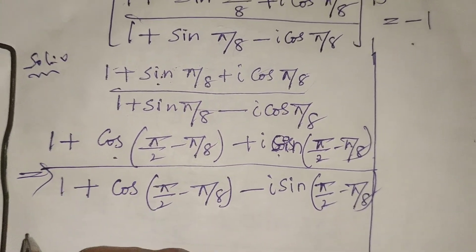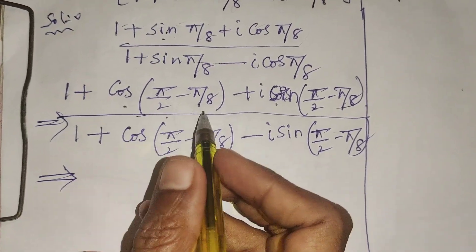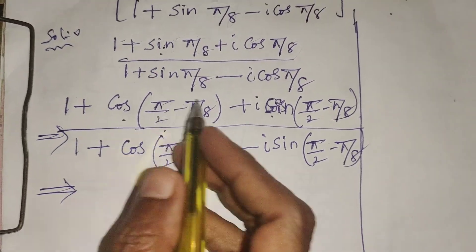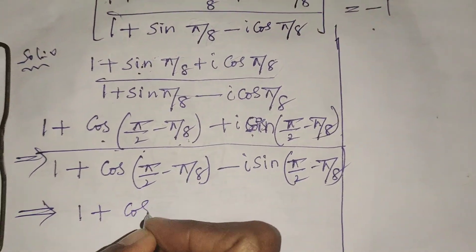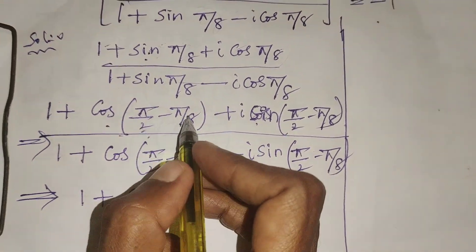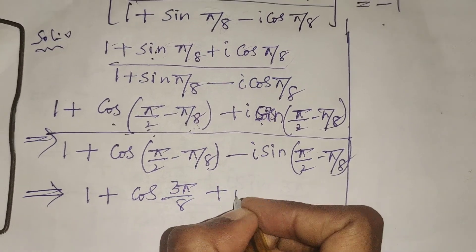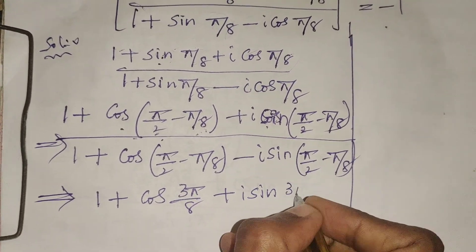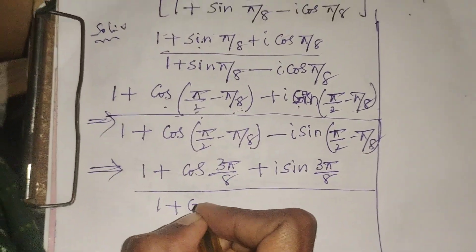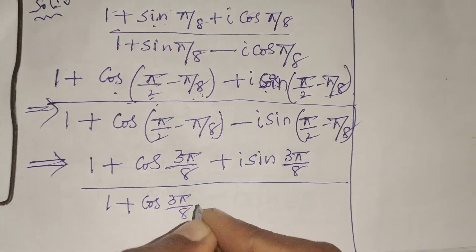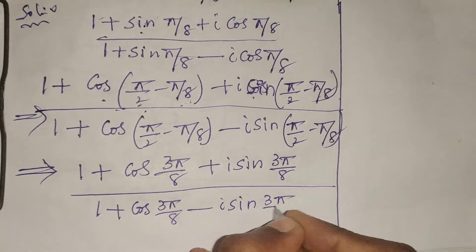Now, π/2 - π/8: taking the LCM gives us (4π - π)/8 = 3π/8. So the expression becomes (1 + cos(3π/8) + i·sin(3π/8)) / (1 + cos(3π/8) - i·sin(3π/8)).